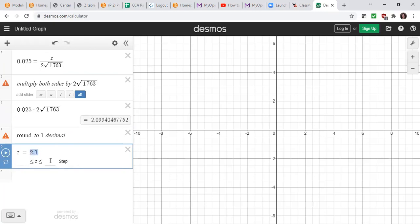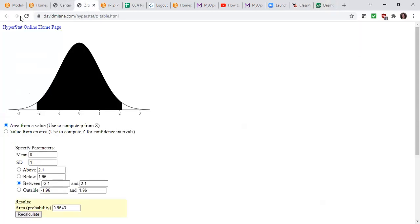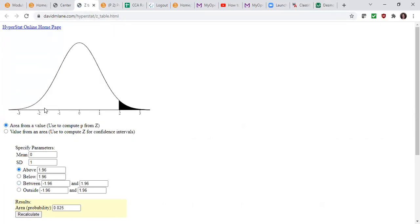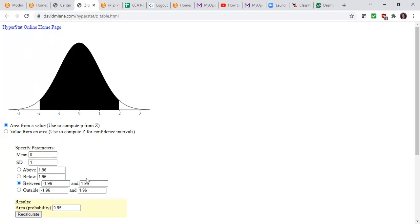Now that we know what z alpha over 2 is, we're going to take our 2.1 and go to davidmlayne.com hyperstat backslash z table. So what we want is between, so we take our 2.1 and negative 2.1. We want the area from a value, so we have the value. We're going to click recalculate. And so the area between 2.1 and negative 2.1 is 0.9643 or 96.43.